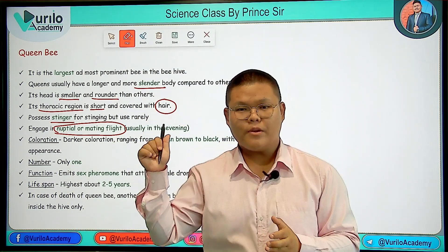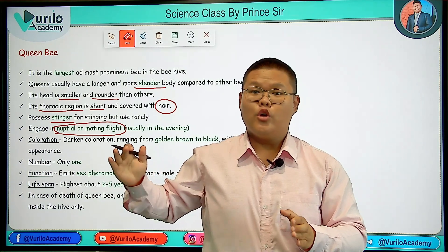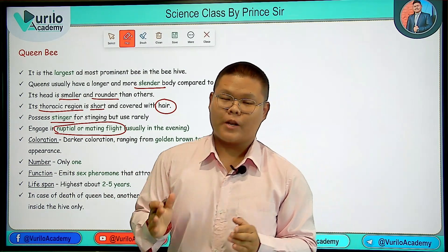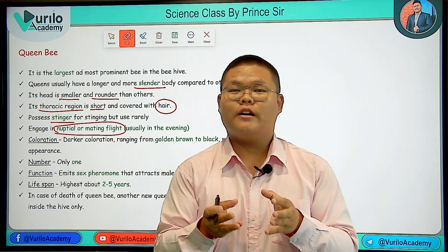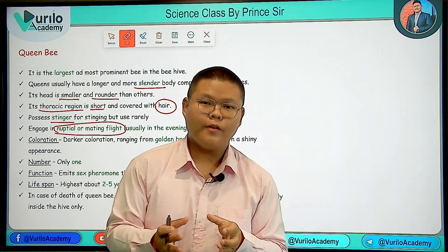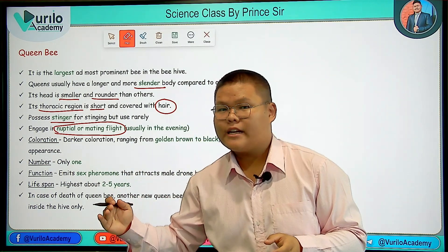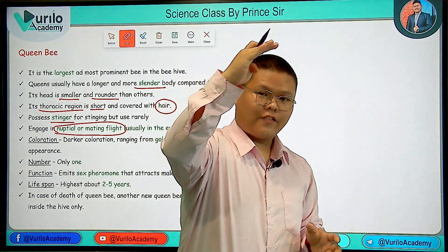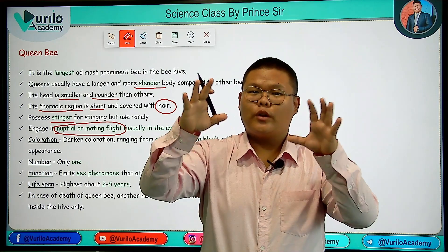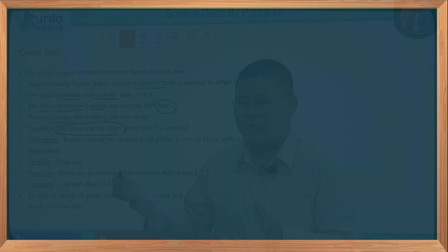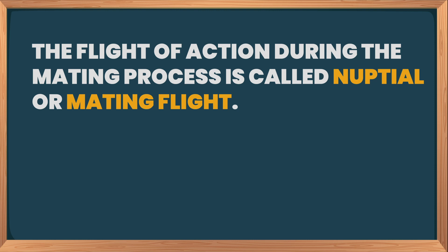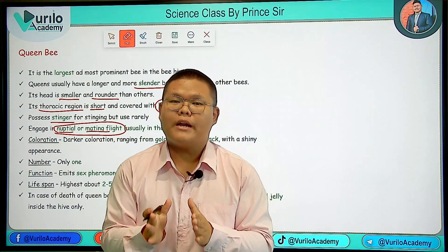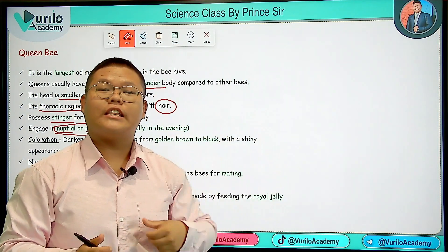Here is the nuptial or mating flight. The Queen Bee performs a mating flight. The male Drone Bee also participates in mating. This flight during the mating process is called the nuptial or mating flight, which usually occurs in the evening time.